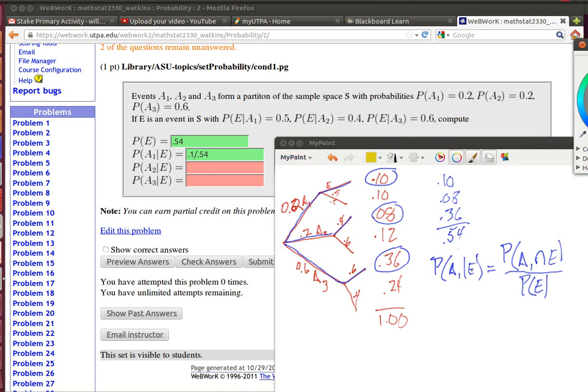To have A1 and E, that would have to be coming up this branch right here. A1 and E, that's the only way that we can get that. So this number on top there is going to be 0.10 divided by the probability of E, which we just calculated before, is 0.54.